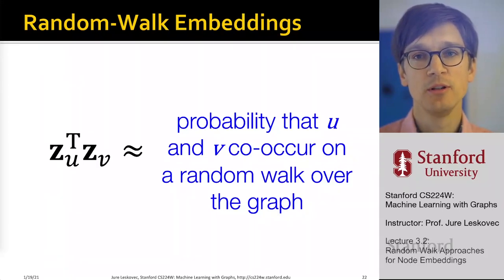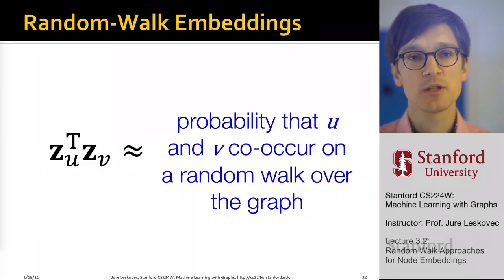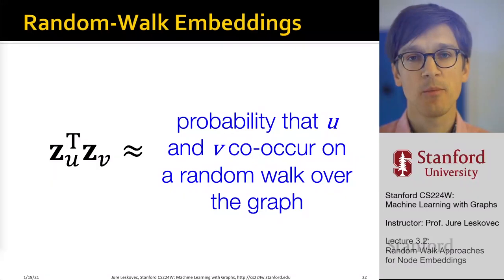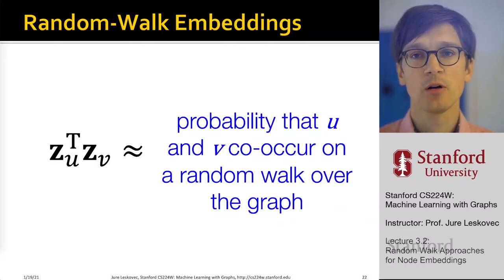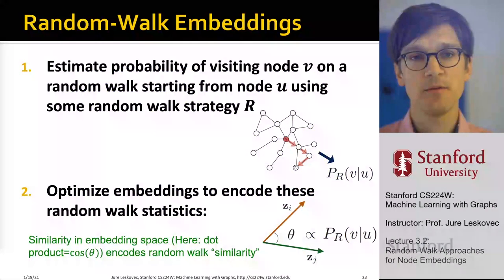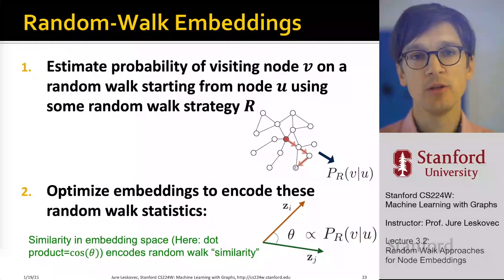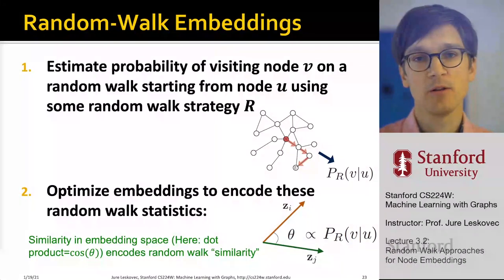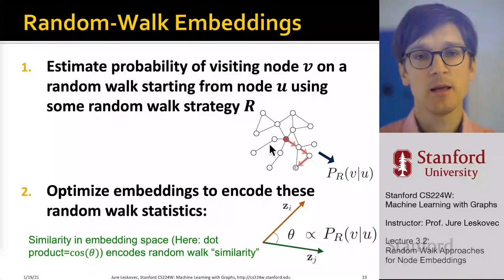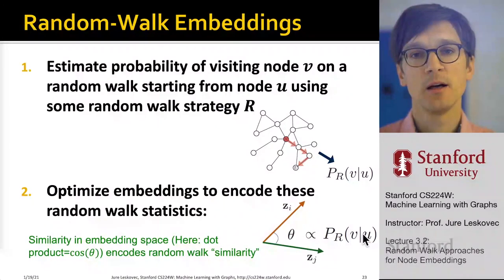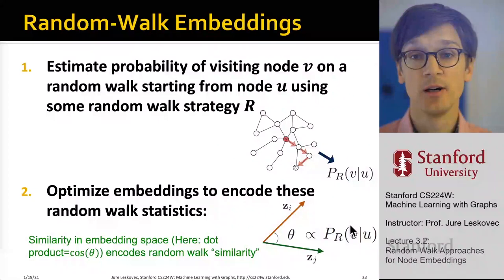We want to learn coordinates z such that the dot product of two nodes u and v approximates the probability that u and v co-occur on a random walk over the graph. First, we estimate the probability of visiting node v on a random walk starting at node u using some random walk strategy r. For now, think of it as a simple random walk where we pick one of the neighbors uniformly at random and move to it. We then optimize the embeddings so the dot product — the cosine of the angle between the two vectors — is proportional to the probability that u and v are visited on the same random walk.